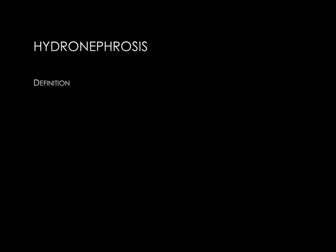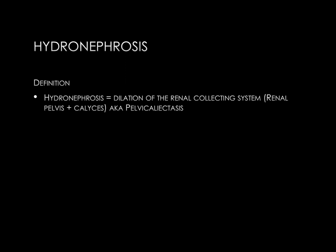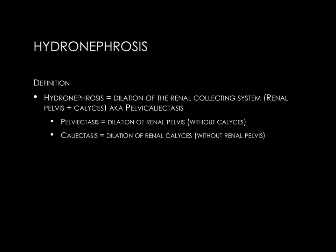The definition of hydronephrosis is simply dilation of the renal collecting system. To call hydronephrosis on an imaging study, there should be dilation of both the renal pelvis and the renal calyces. If you see the term pelvicaliectasis — meaning ectasis or dilation of both the renal pelvis and calyces — that is essentially equivalent. However, pelviectasis (dilation of the renal pelvis alone) and caliectasis (dilation of the renal calyces alone) can occur on their own in various conditions.